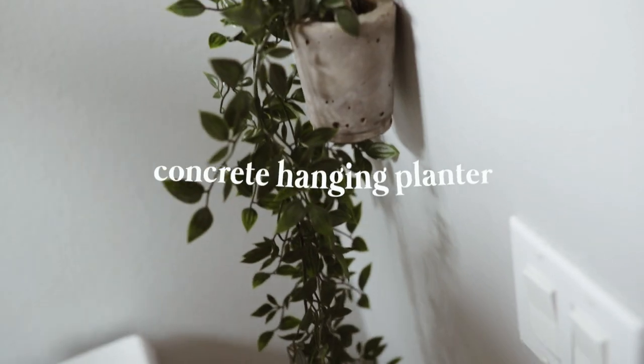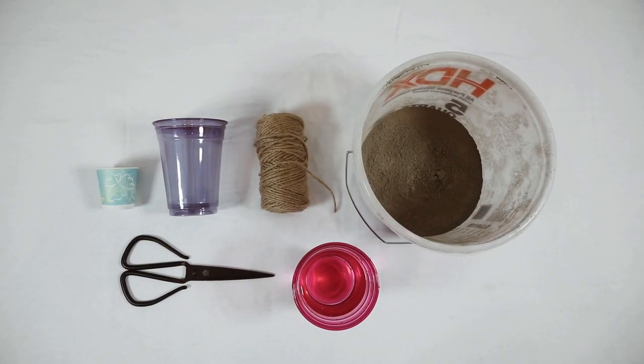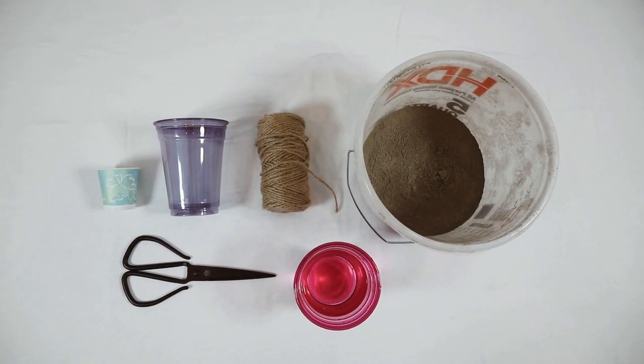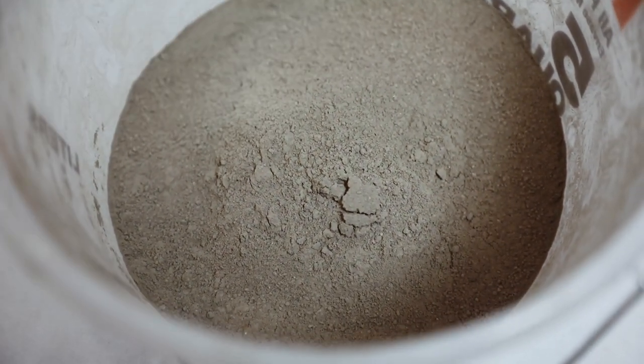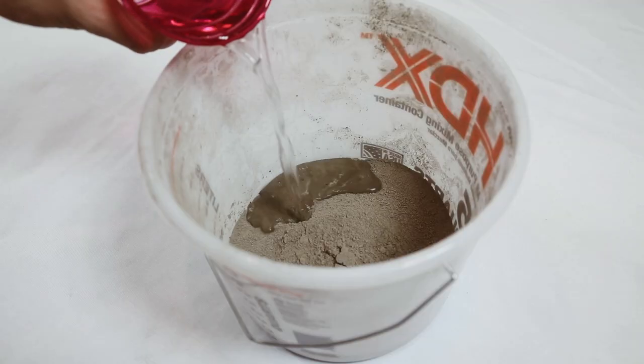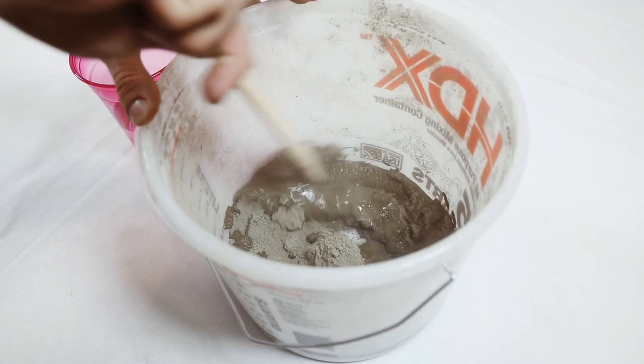Next we're creating a perfect gift idea which is a concrete hanging planter. You're just going to need a plastic cup, a little Dixie cup, some twine, cement, and scissors. So I actually sifted my cement so I got really fine particles, which I do for a lot of my projects that are smaller in size.